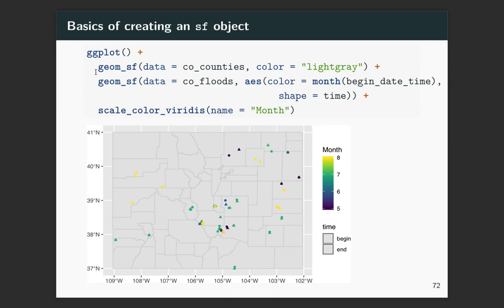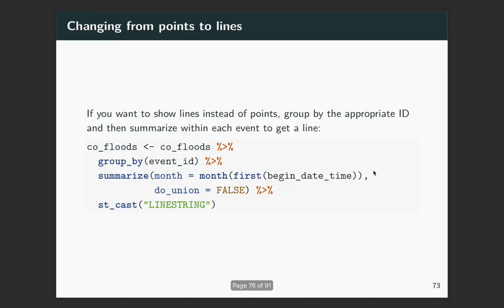Alright, so we can plot that now. I'm using the GMSF with the Colorado counties first, and that's giving the outlines of all of the counties. And then next, I'm using that Colorado floods, and in this case, I'm going to pull out the month from the date time, so we can look at when these happen during the year. And then I'm using the time to show the shape, the time column. So it's one shape for the beginning of an event and one shape for the end of the event. So we can kind of see from here which of these might go together by matching color and then making sure that we have those two different shapes.